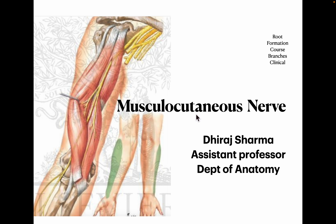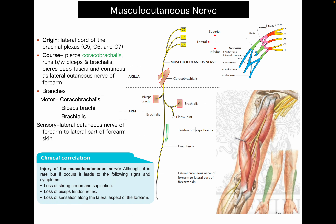Today's lecture is regarding the musculocutaneous nerve. We'll see the root value, formation, course, branches, and clinical aspects related with the musculocutaneous nerve. The origin of the musculocutaneous nerve takes place from the lateral cord of the brachial plexus, which has root values C5, C6, and C7, as you can see in the diagram.